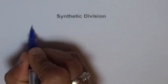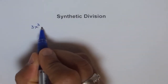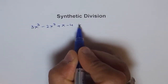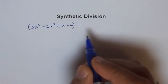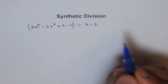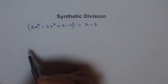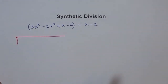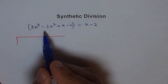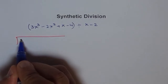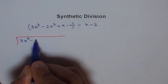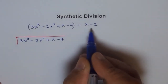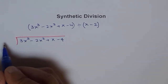We'll try to divide one polynomial by another. Let's take a very simple example: 3x³ minus 2x² plus x minus 4, divided by x minus 2. Now let's review how we could do it using long division. We write the dividend 3x³ minus 2x² plus x minus 4 inside the long division bracket, and the divisor x minus 2 on the outside.